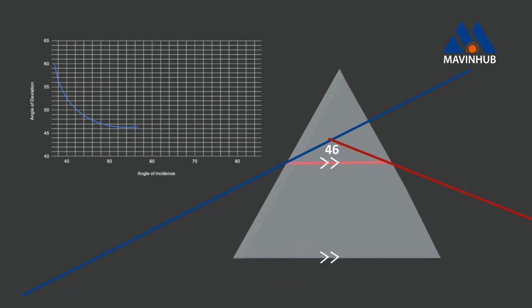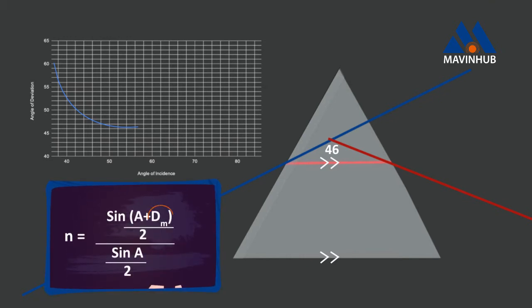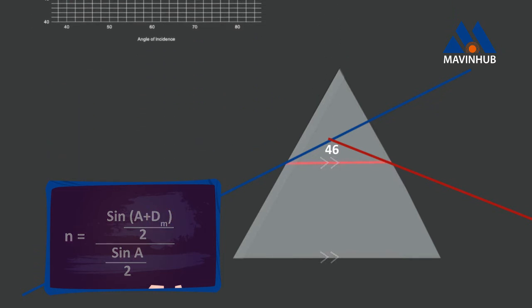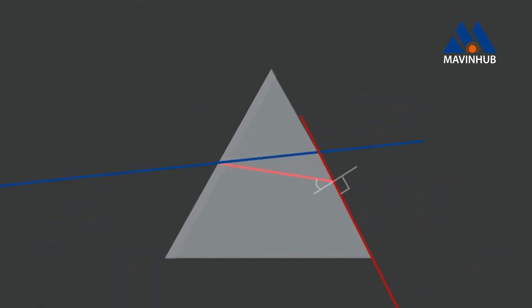The refractive index of a glass prism N equals the following, where D underscore M is the minimum angle of deviation. When the angle of refraction in the vacuum is 90 degrees,